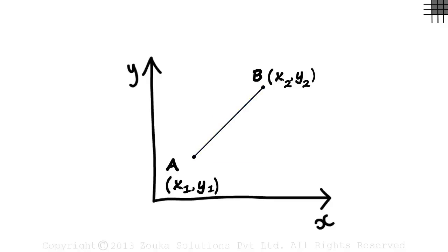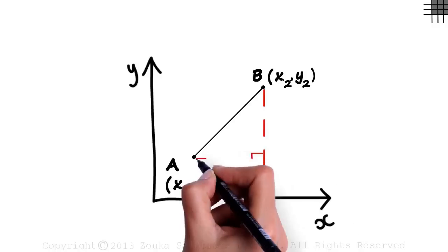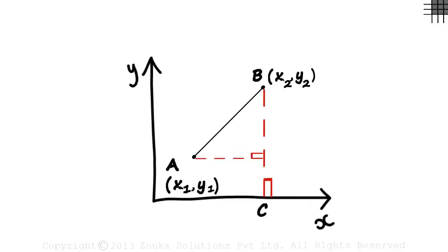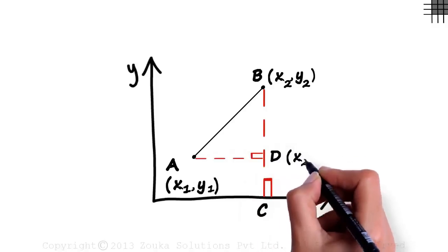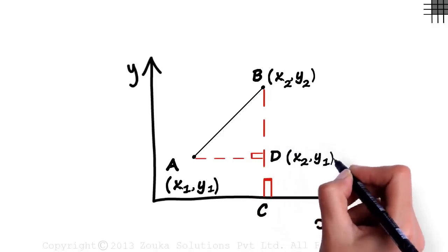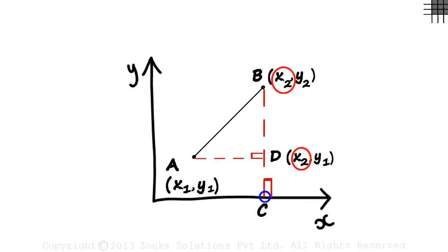So we drop a perpendicular to the x axis and then draw another perpendicular to BC. So the coordinates of point D would be x2 will be here on the x axis and y1 will be here on the y axis.